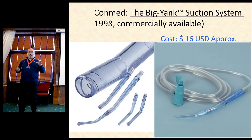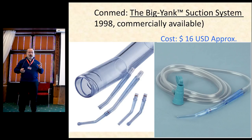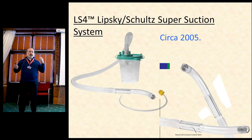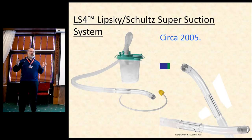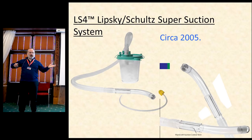What we have commercially available — at least in the United States — this is a product circa 1998 called the Big Yank, approximately $16 American dollars. It's a larger bore suction catheter with a removable tip in the event you encounter solids. There's also a product called the LS4 Lipsky Schultz Super Sucker, intended for solids. It is so bulky it's something you would never carry outside of a hospital. The concept here is to have a large bore sucker with large bore suction tubing the size of ventilator tubing going back to a suction container.